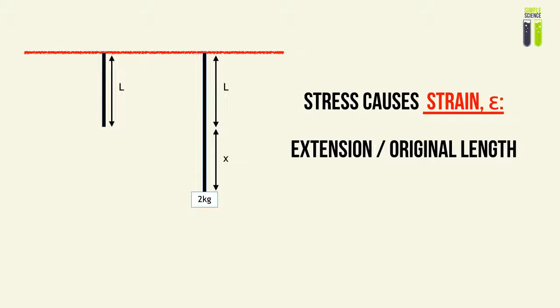Looking at the diagram, strain, epsilon, is equal to x over L. And since x is in meters, or any particular length dimension, and L is a particular length dimension, therefore it has no units.